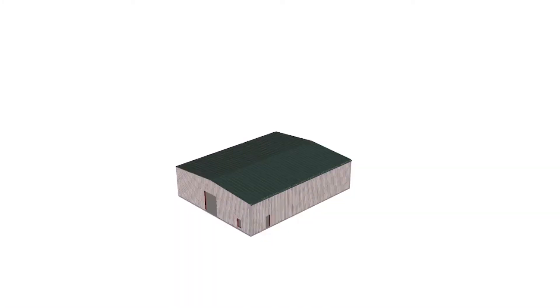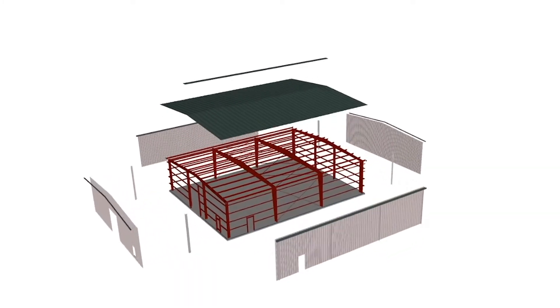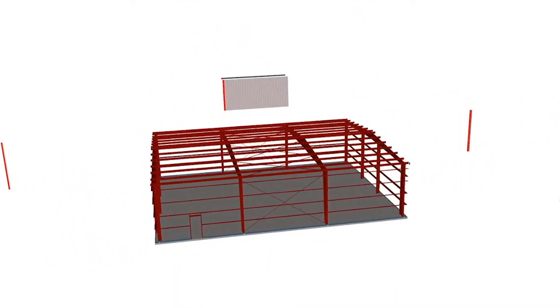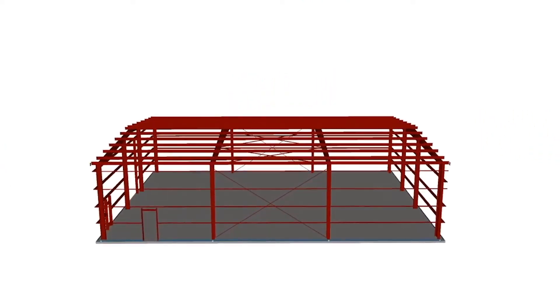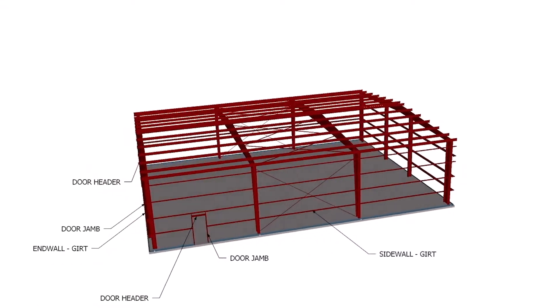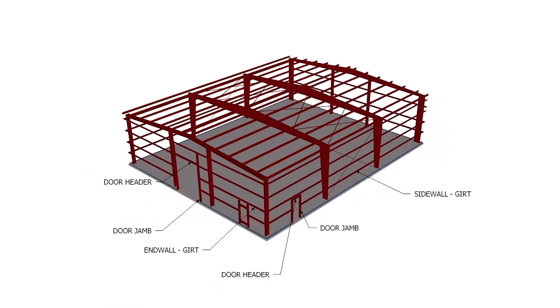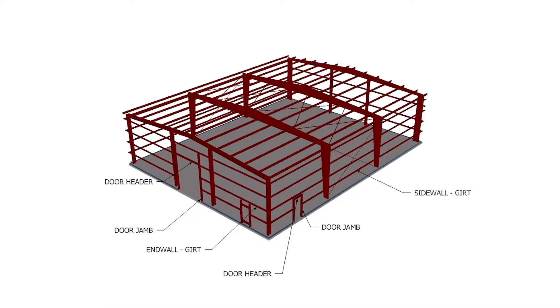Now let's take a look at the structure behind the roof and wall cladding. Secondary framing members run horizontally on the walls and are called girts. They are typically Z-shaped, cold-formed steel.